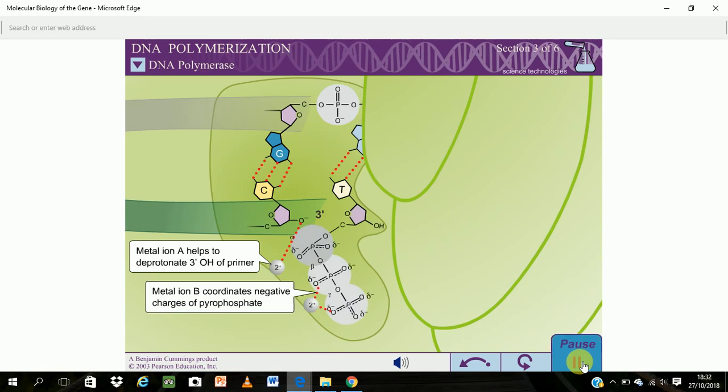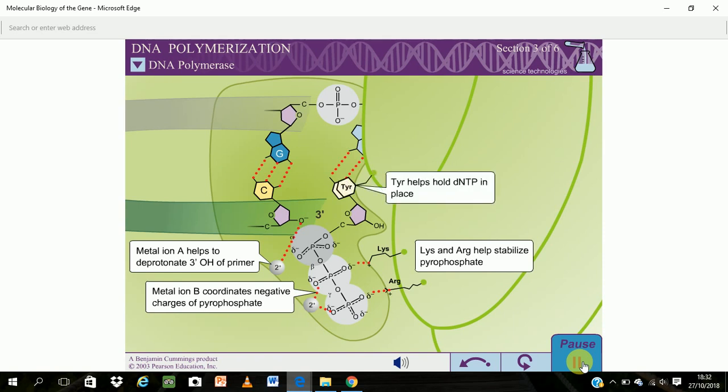Metal ion B coordinates the negative charges of the beta and gamma phosphates of the DNTP and stabilizes the pyrophosphate leaving group. Lysine and arginine residues on the finger domain also help to stabilize the pyrophosphate and, through stacking interactions, a tyrosine residue attached to the fingers helps to hold the DNTP in place for catalysis.